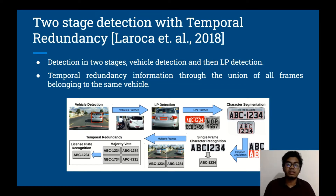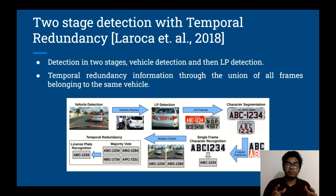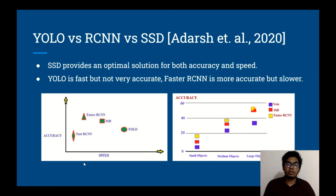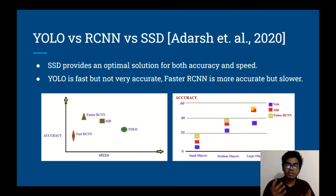An existing ALPR system uses a two-stage detection method with temporal redundancy. For detection, they perform vehicle detection first and then license plate detection. They also employ a temporal redundancy feature where information is collected through the union of all frames belonging to the same vehicle, followed by a majority vote to get the final license plate characters. From a comparison graph of YOLO, Faster R-CNN, and SSD, we can clearly see that SSD provides an optimal solution when both accuracy and speed need to be accounted for.